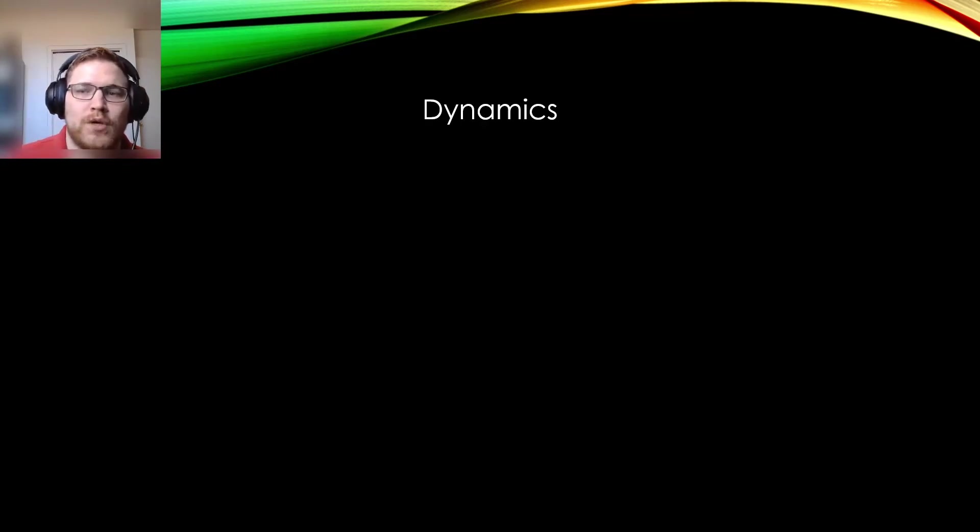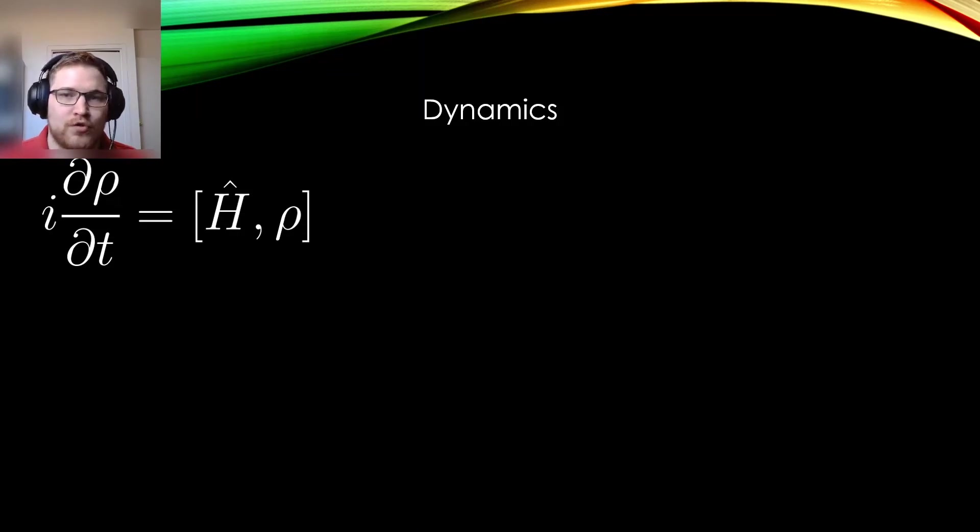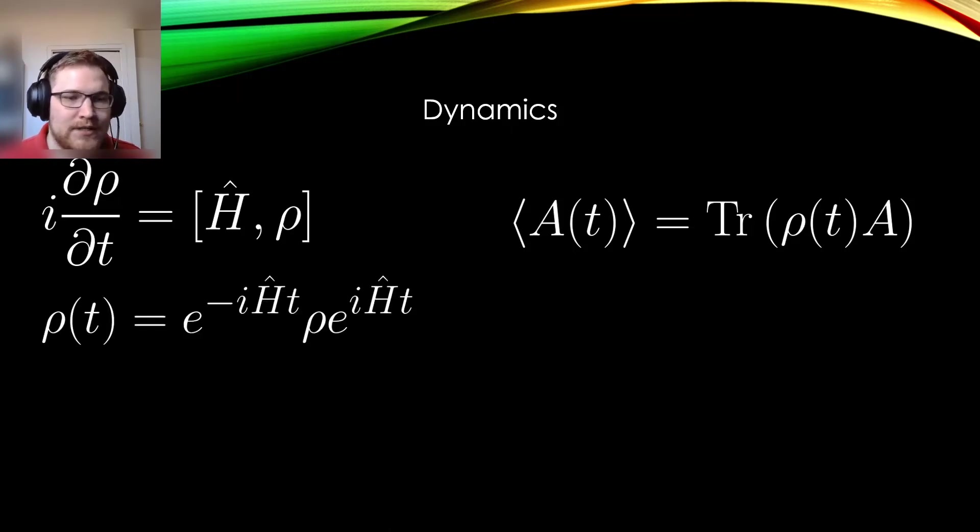From the Schrodinger equation, we can derive the von Neumann equation of time evolution seen here. The von Neumann equation features the commutation relationship between the Hamiltonian and the density matrix itself. Then the expectation value for an observable in time can be rewritten in the following way, where the density matrix rho evolves with the Hamiltonian being applied to it in time, as seen here on the bottom left.